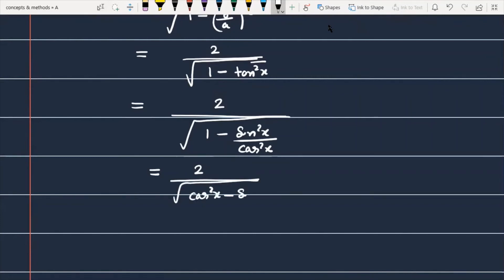This becomes (cos²x - sin²x) divided by √(cos²x). If I talk about the next step, this becomes 2√(cos 2x) because we know very well that cos 2x = cos²x - sin²x, divided by cos²x.